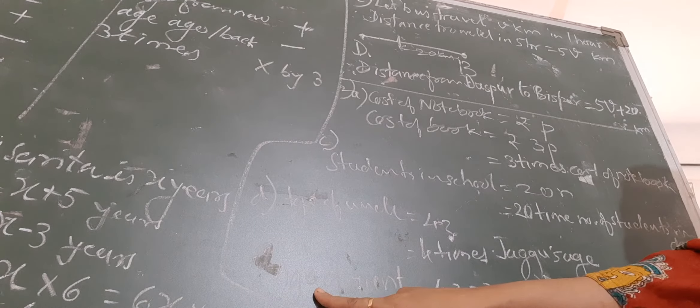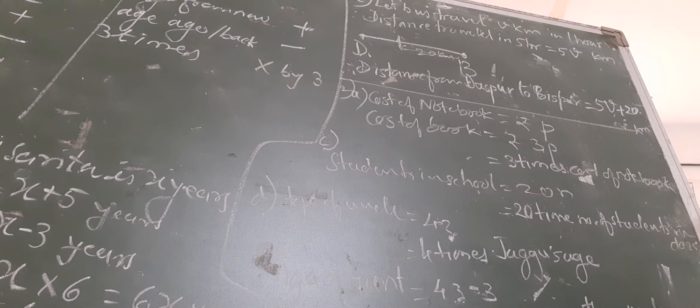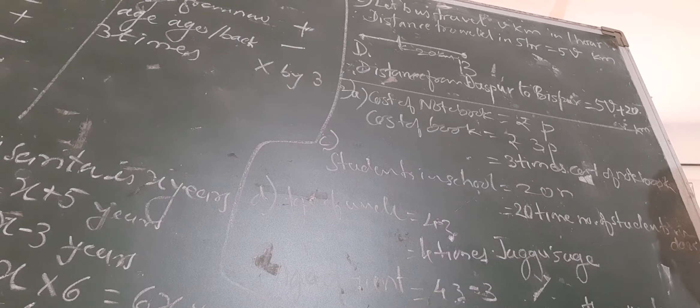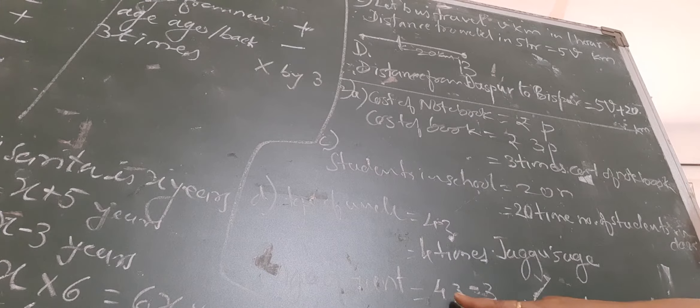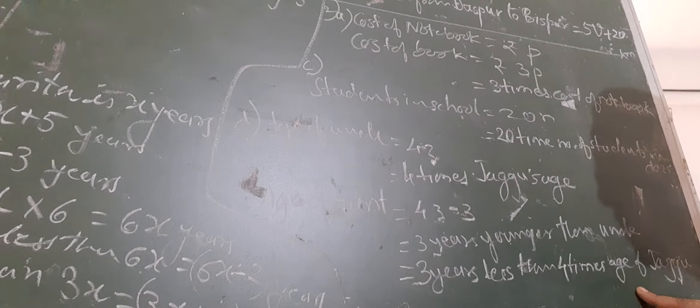Age of auntie is equal to 3 years younger than the uncle, or we can say the auntie is 3 years less than 4 times the age of Jaggu.